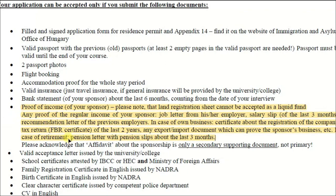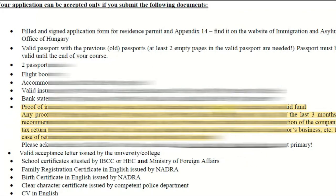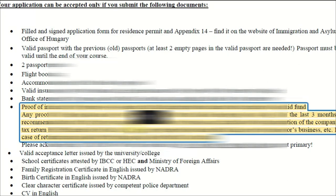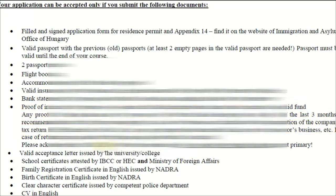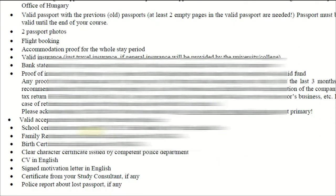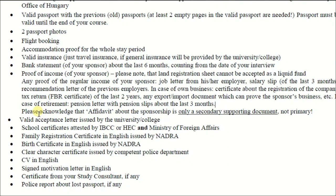For Stipendium Hungary scholarship students or those having any other scholarship, showing at least one lakh — around 50,000 Pakistani rupees, approximately 400–500 euros — is enough. For self-funded students, at least 10 to 15 lakh rupees is required.